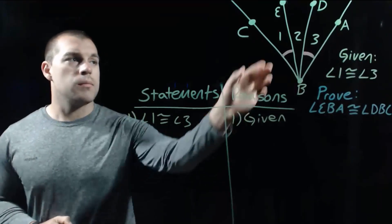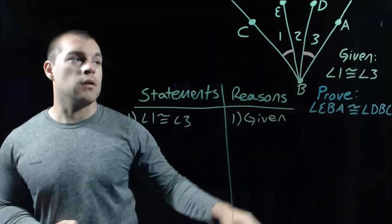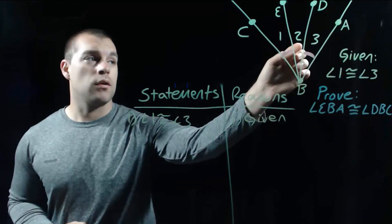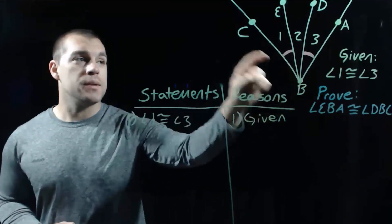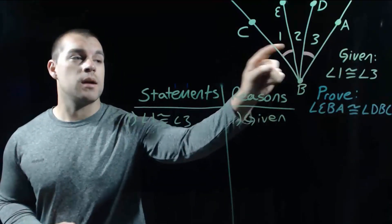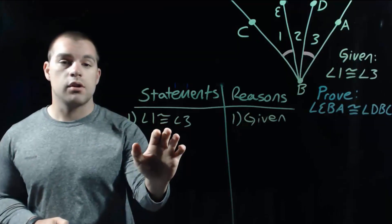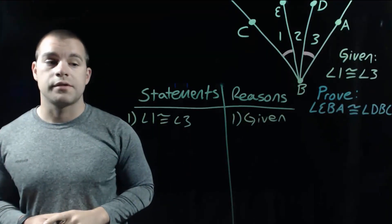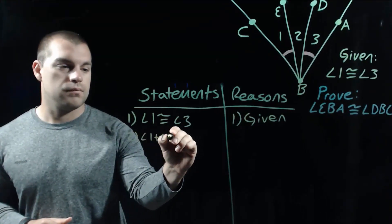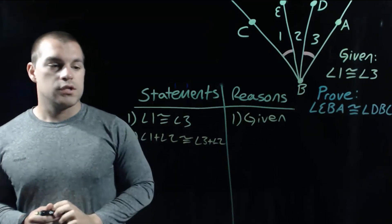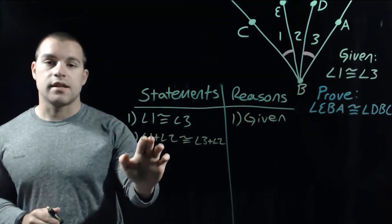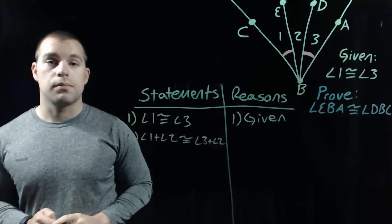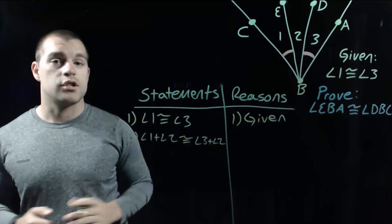In statement number 2, I'm going to start building up towards these bigger angles. If we look, EBA is made up of angle 3 and angle 2, and DBC is made up of angle 1 and angle 2. So what I'm going to do is add angle 2 on both sides. We get the statement that angle 1 plus angle 2 is congruent to angle 3 plus angle 2, and that's our addition property.